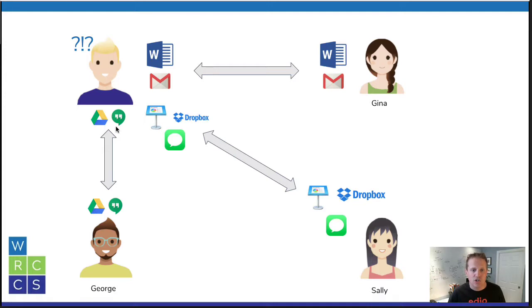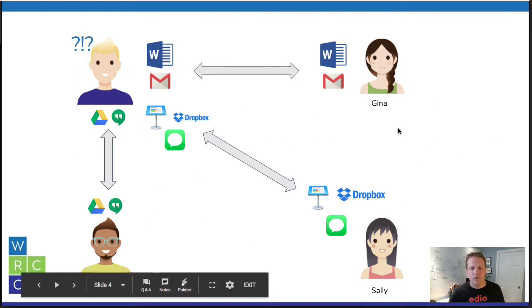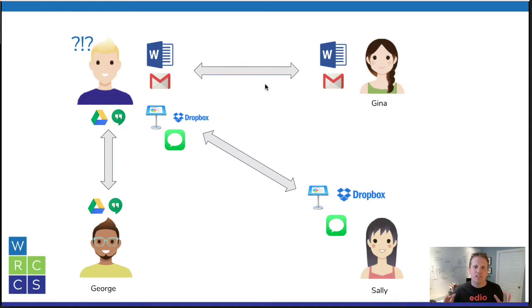Once we get later into the project and I want to find a document someone sent me, I have to search across three or four different platforms and remember which tool was used. If we had just said at the start we're going to use Google Docs and Google Drive, I'd have only one place to search for everything. To avoid this kind of clutter, it's really important at the start of a project to make some decisions as a team and use similar tools.